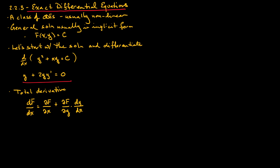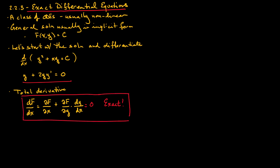So now, if the differential equation is of the form: partial of f with respect to x, plus the partial of f with respect to y multiplied by dy/dx, and that equals zero, then we say that it is exact. And this is indeed what we have up here — we have taken the total derivative with respect to x and the right-hand side equals zero, so we have an exact differential equation.